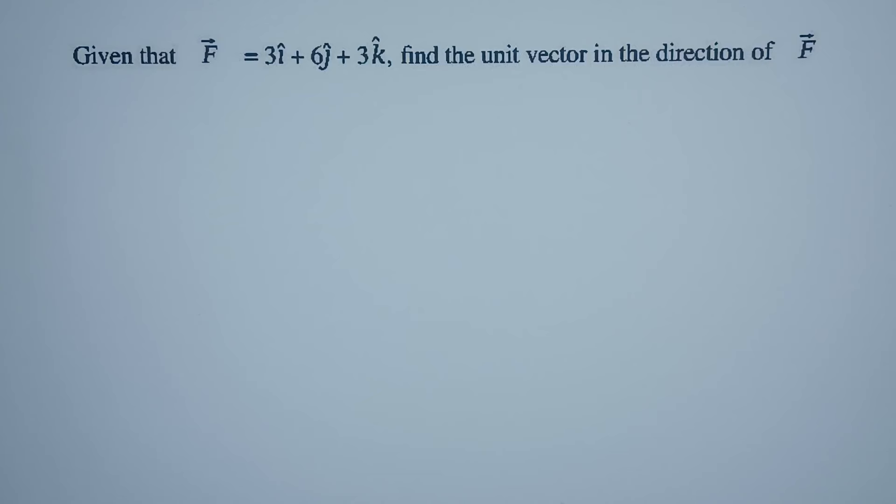Given that vector F is 3i plus 6j plus 3k, find the unit vector in the direction of F.